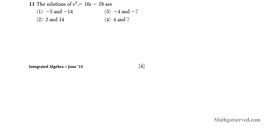It says the solutions of x squared equals 16x minus 28 are. Now there are two ways we can solve this problem. First method we can plug in the solutions and see which one creates a true statement. And the second method is by factoring this quadratic equation after putting it in standard form. So I'm going to show you both methods.